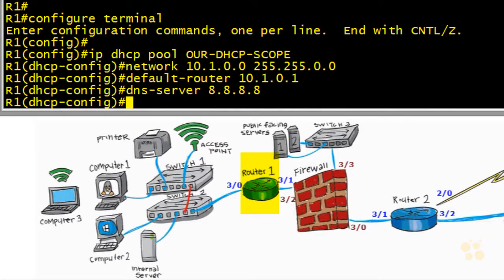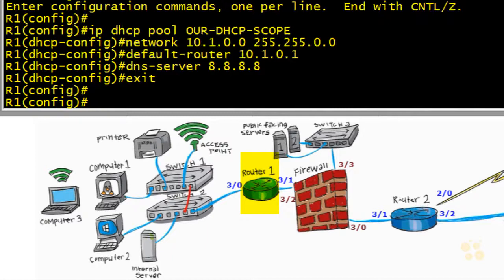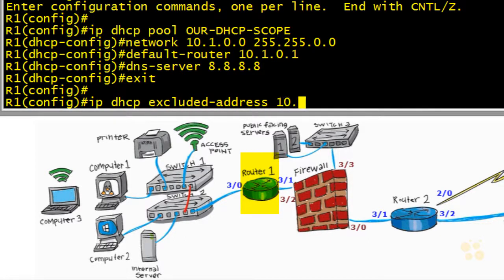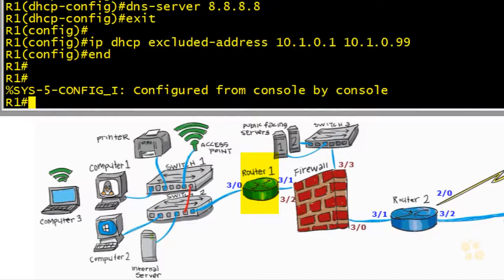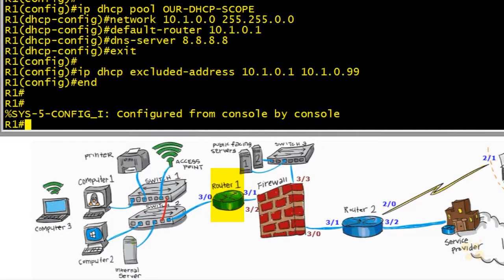Currently we're in DHCP pool configuration mode. If we type exit, that takes us back out to global configuration on this Cisco router. If we want to exclude addresses and tell this router not to hand out, for example, .1 through .99, we use the command ip dhcp excluded-address with a start range of 10.1.0.1 and an end range of 10.1.0.99. That basically tells the router not to hand out any of those IP addresses — start somewhere above that.